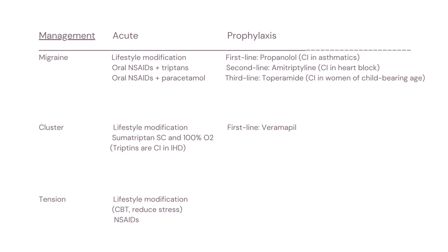The second line would be pharmacological intervention. For migraines, the acute management is oral NSAIDs or triptans, the most common being sumatriptan. We can also second-line use oral NSAIDs and paracetamol. For cluster headaches, after lifestyle modification, we want to try subcutaneous sumatriptan and 100% oxygen. For tension headaches, we'd want to try NSAIDs, aspirin, or paracetamol.